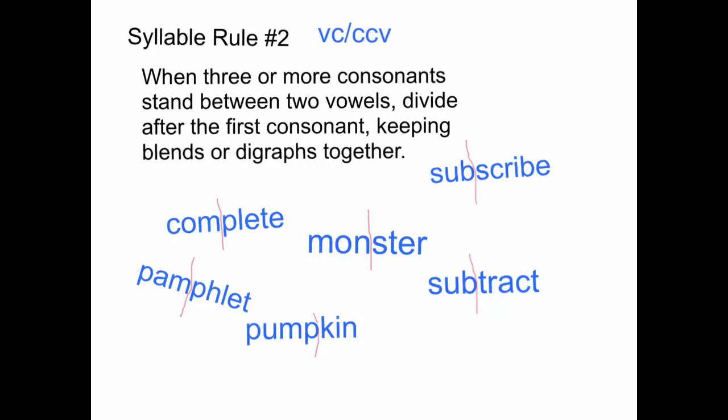Syllable Rule Number Two: V-C-C-C-V — Vowel, Consonant, Consonant, Consonant, Vowel. When three or more consonants appear between two vowels, divide after the first consonant, keeping blends or digraphs together. As a complete example, consider the word 'monster.'